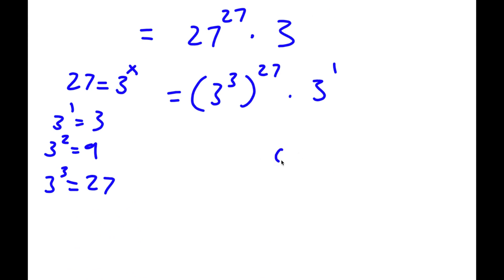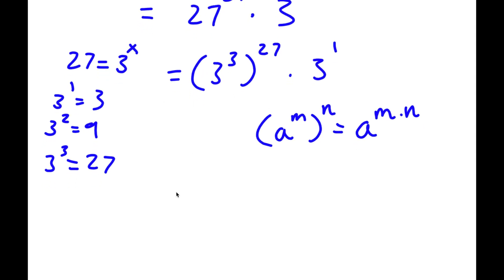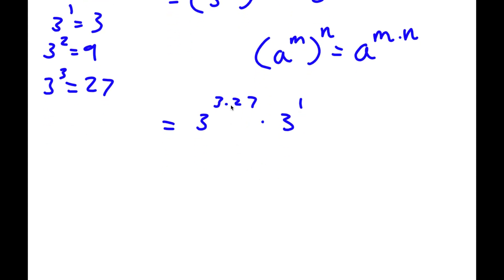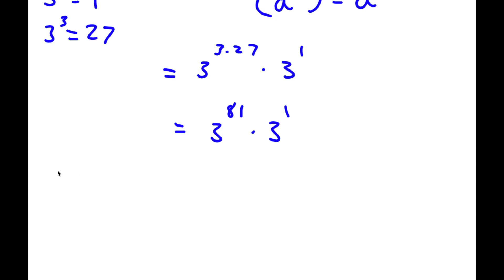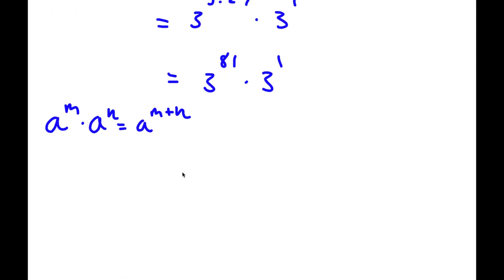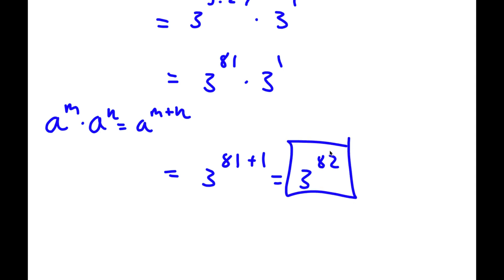Now if I have something in the form a to the power of m to the power of n, this is equal to a to the power of m times n. So 3 to the power of 3 to the power of 27 equals 3 to the power of 81. Then 3 to the power of 81 times 3 to the power of 1 equals 3 to the power of 81 plus 1, and 81 plus 1 is 82, so I have 3 to the power of 82. This is my answer.